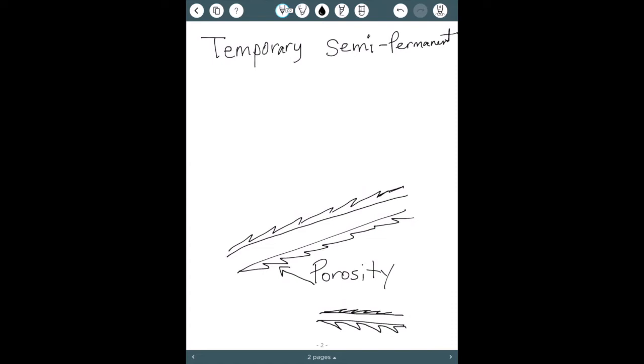Then it's just a measure of how porous. Usually there are multiple porosities on one head. So they could have a resistant porosity at their new growth, a slight porosity through their mid shaft, and extreme porosity on their ends. So it's really important to take the time to analyze all the zones of the hair that you're working with and formulate accordingly.